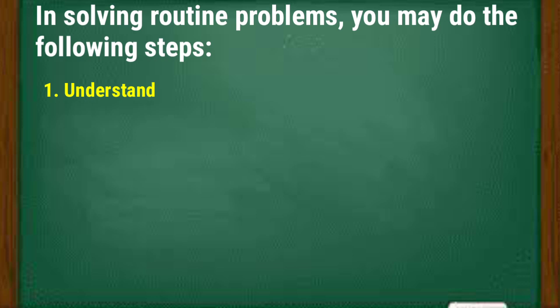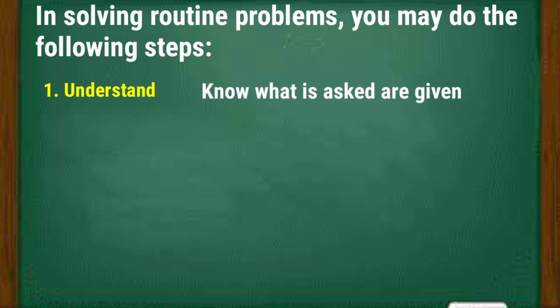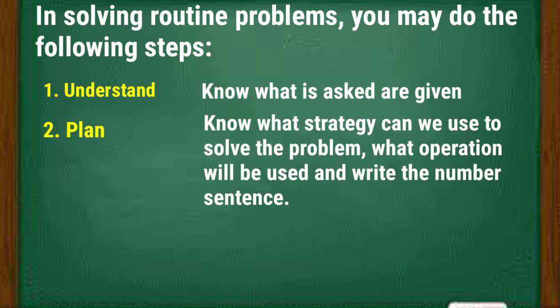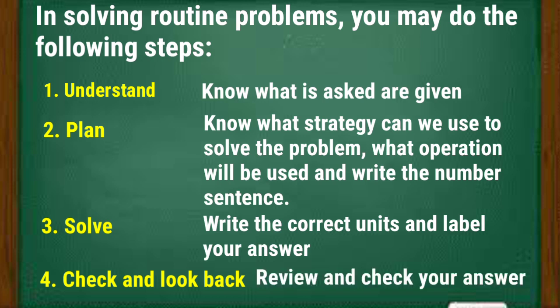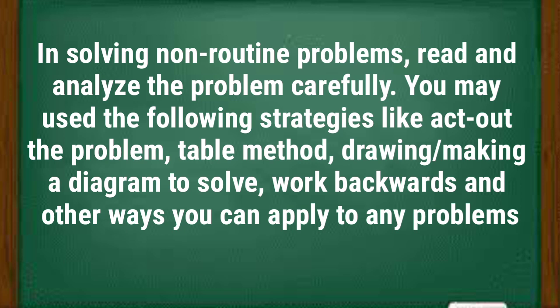In solving routine problems, you may do the following steps. The first one: understand — know what is asked and what are given. Second, plan — know what strategy can be used to solve the problem, what operation will be used, and write the number sentence. The third one: solve — write the correct units and label your answer. The last one: check and look back — review and check your answer. In solving non-routine problems, read and analyze the problem carefully. You may use strategies like act out the problem, table method, drawing or making a diagram to solve, or work backwards.